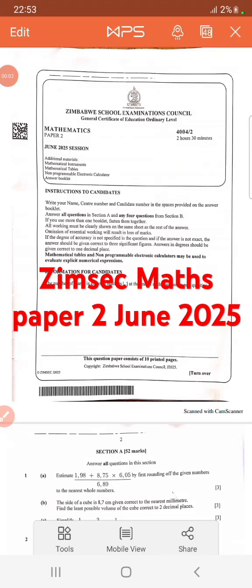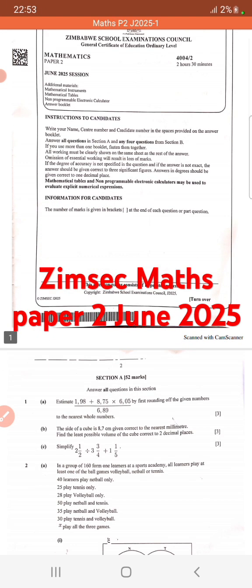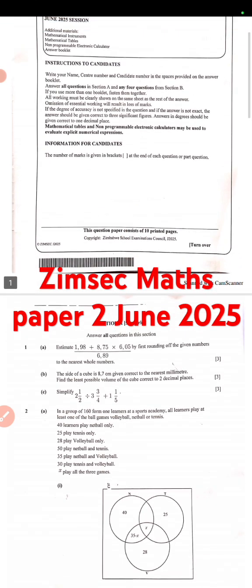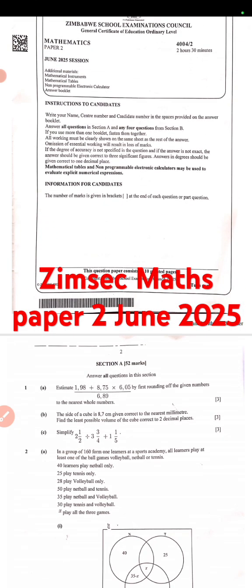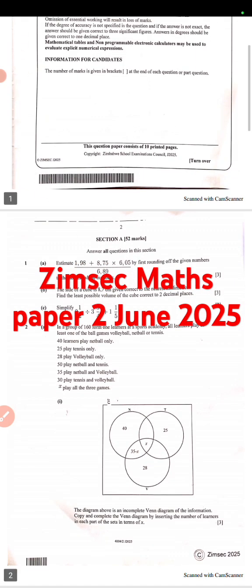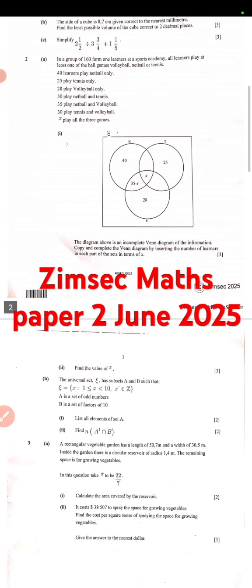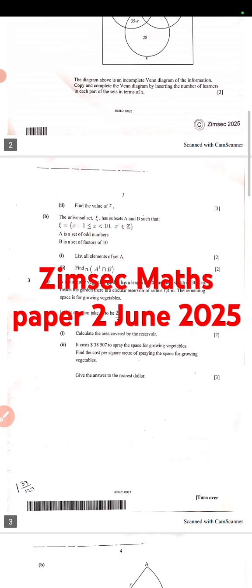Good afternoon guys, so this is the June 2025 paper 2 and this is Sir Griggs on this paper. We're just going to walk through it so that I can show you what the section A was like for the June 2025.